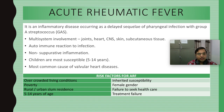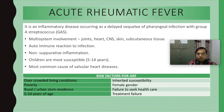The risk factors for acute rheumatic fever are similar to those for streptococcal infection: overcrowded living conditions, poverty, unhygienic conditions, rural or urban slum residence, age 5 to 14 years, female gender, failure to seek healthcare, treatment failures, and inherited susceptibility — genes also play a role in developing acute rheumatic fever.